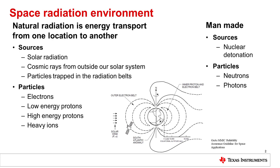There are two sources of radiation: natural and man-made. The natural sources are a combination of cosmic radiation from outside the solar system, solar radiation from our Sun, and particles that are trapped in the radiation belts that surround the Earth, which are called the Van Allen belts.